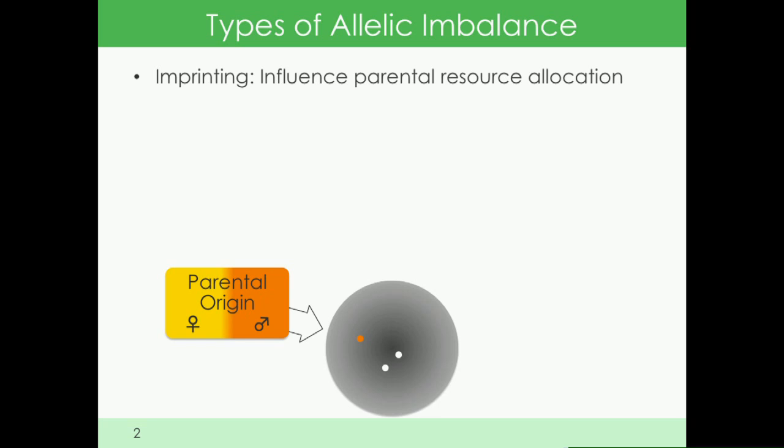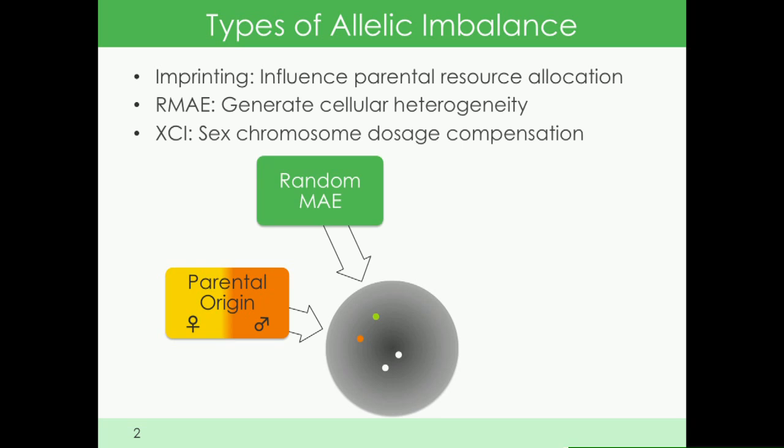In mammals, there are several classes of allelic imbalance, including imprinting, which is when alleles are expressed according to their parental origin. It's thought that this influences parental resource allocation—really a tug of war between the maternal and paternal genomes.